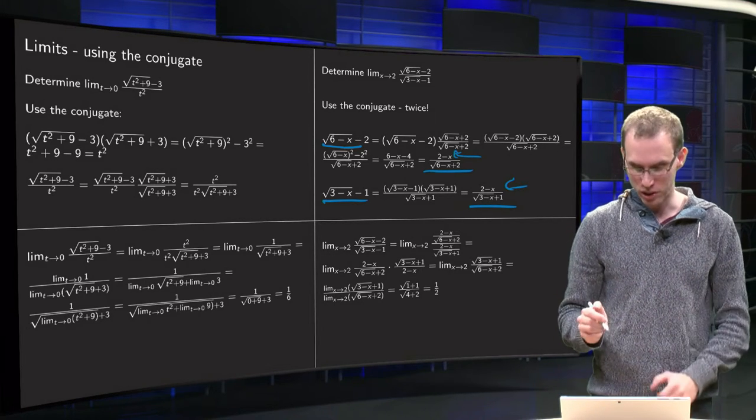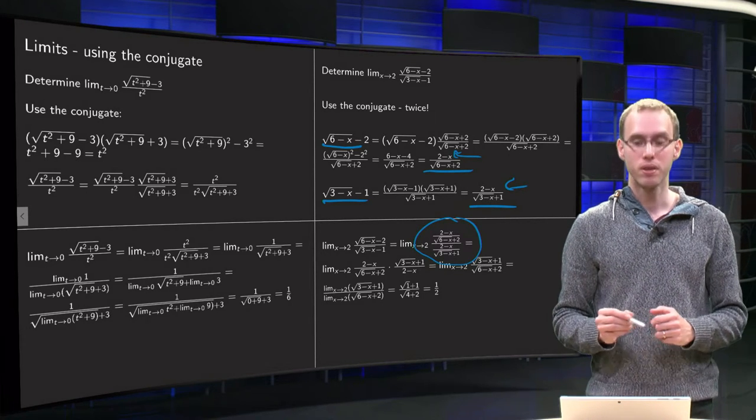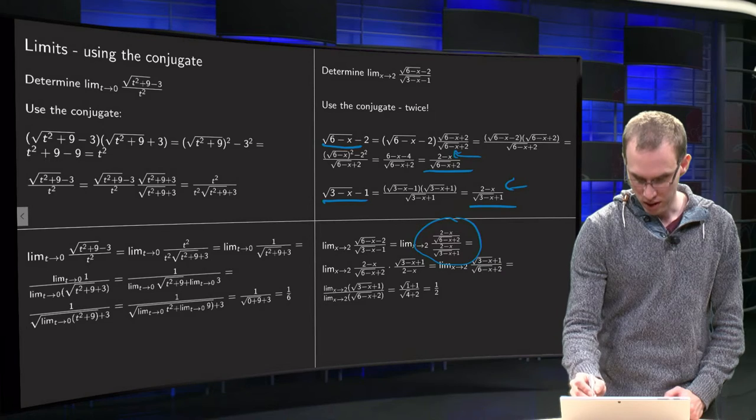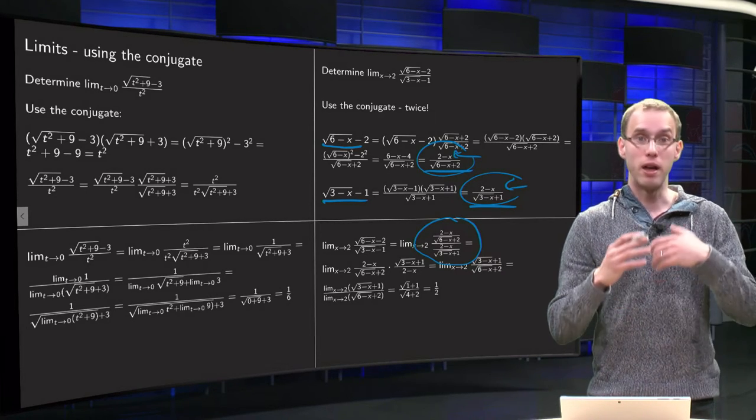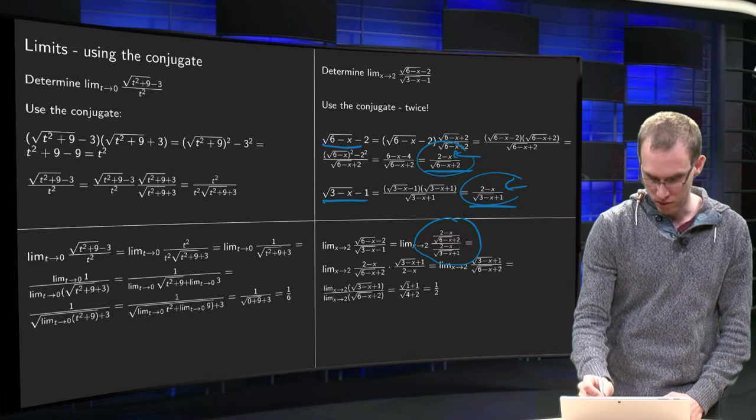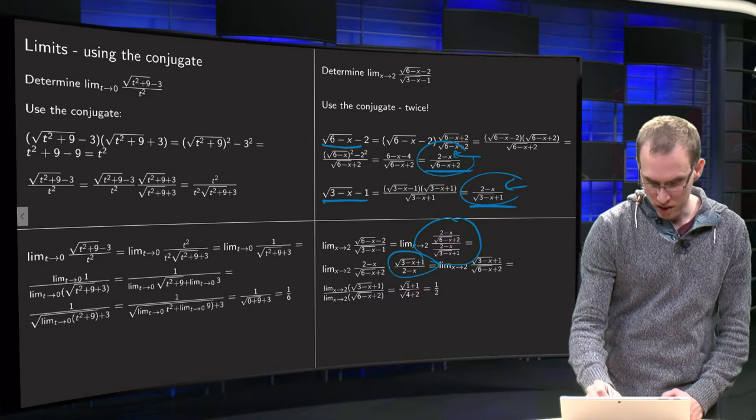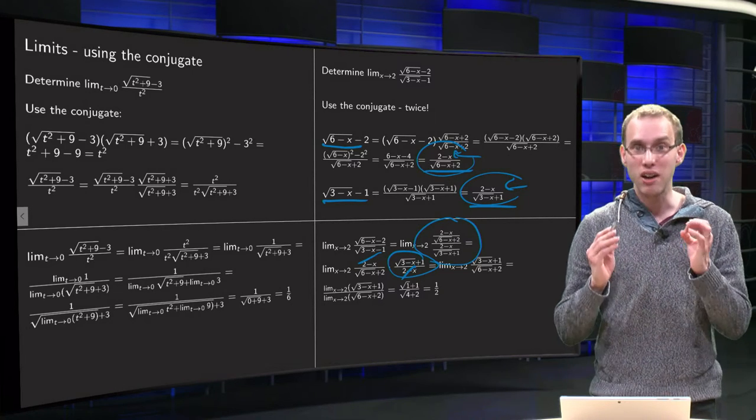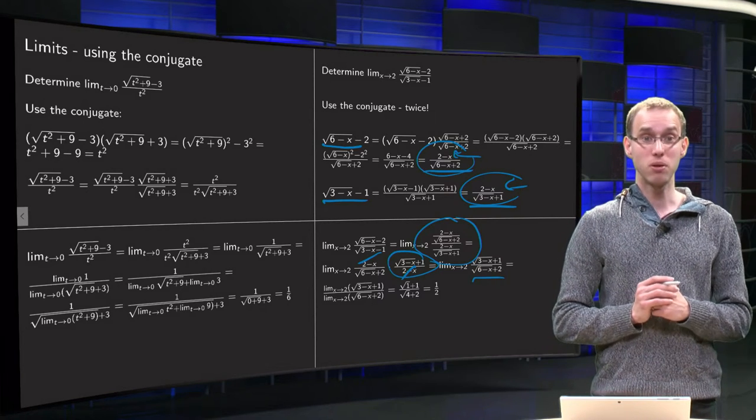So if we take the quotient, first it looks awkward. If we insert the expressions here and there, at first it looks awkward. But dividing a fraction is the same as multiplying by its inverse. So that is what we do over here. And then you see that those factors 2 minus x, the dangerous factors, are now canceling out. So we get a new limit.